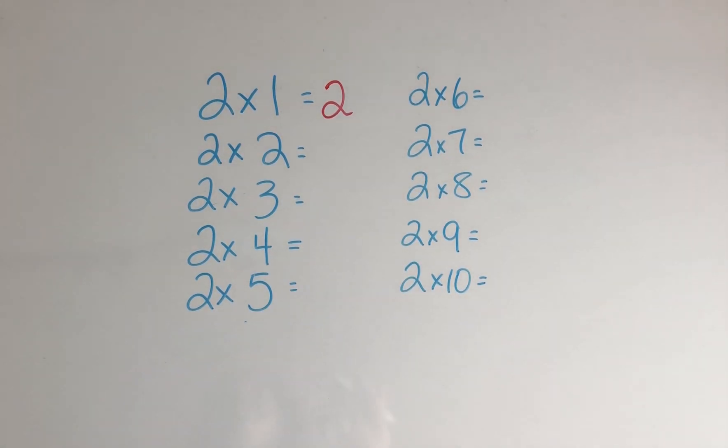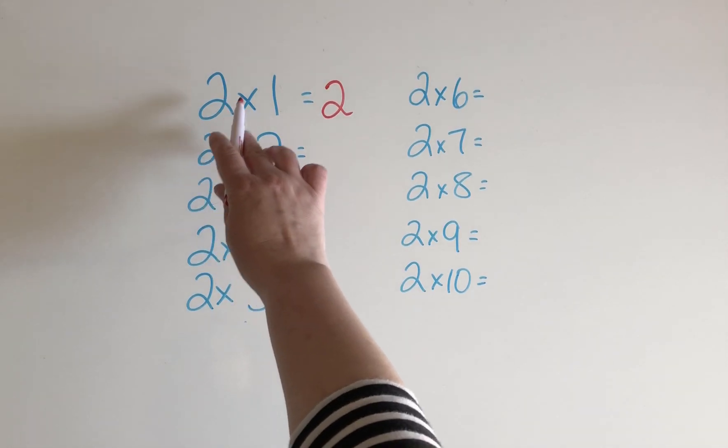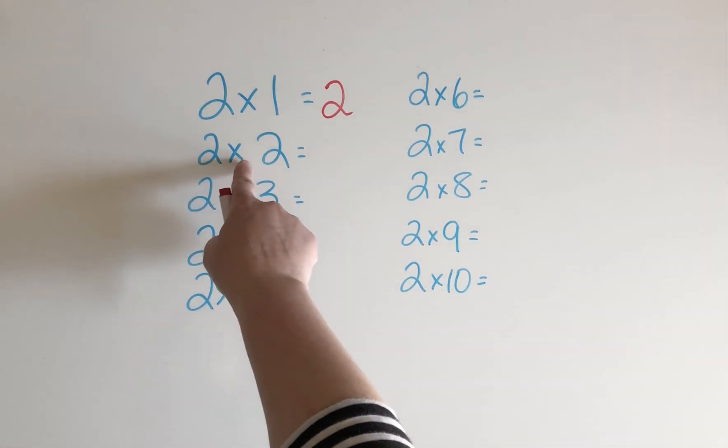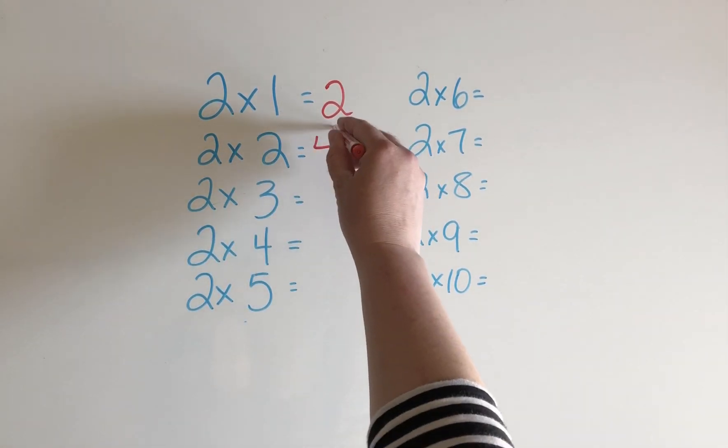We can use the double because 2 means 2 groups of. So here we're talking about 2 groups of 1, or the double of 1. 2 groups of 2. What's the double of 2? That's 4.